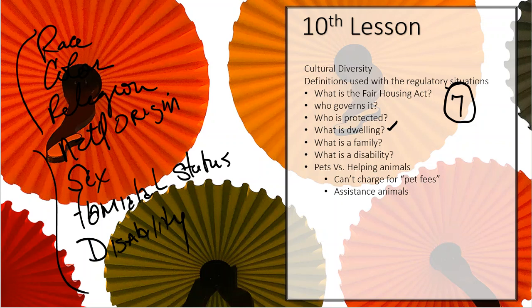A family is defined as any number of people living together, including children under the age of 18 — unless there is a dependent who may be mentally handicapped and still under the control of a parent even if over age 18. This also includes a woman who is pregnant, so a pregnant woman also receives the benefit of familial status protection.